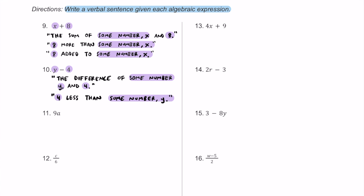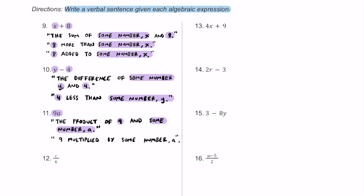For number eleven, we have 9a, which is all one term. Since 9a really means nine times whatever a is, we can say: the product of nine and some number a. We could also simply say: nine multiplied by some number a — just to show that you know it means multiplication.